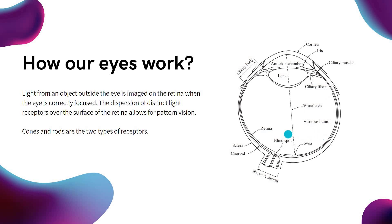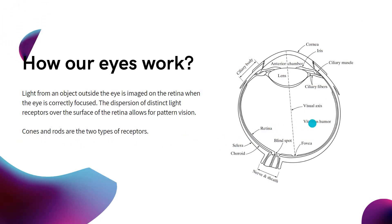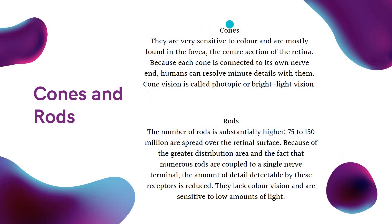Now coming to the receptors — there are two types of receptors, namely cones and rods. Cones are fewer in number compared to rods, but each cone is connected to its own nerve. So with the help of cones, we can resolve minute details. Cone vision is also known as photopic or bright light vision.